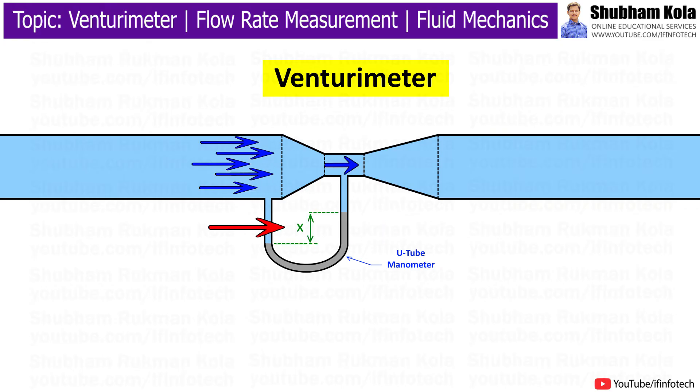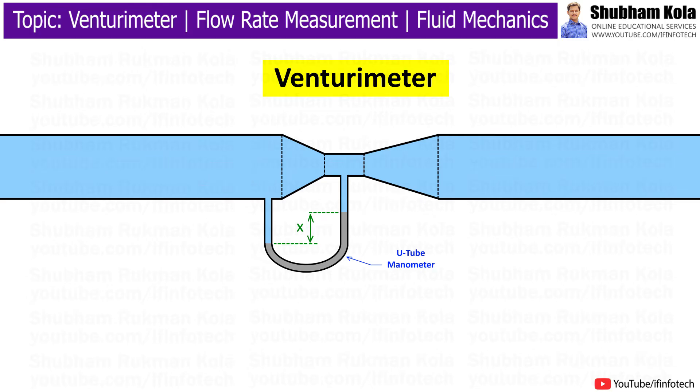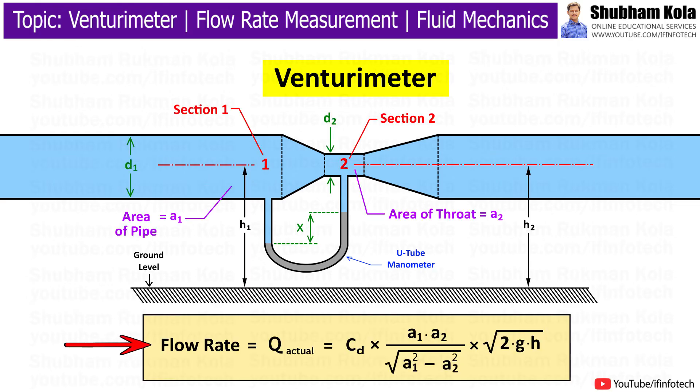This pressure difference between inlet and throat is determined with the help of a U-tube manometer. This pressure difference is used to calculate the flow rate of fluid in the pipe. The flow rate of fluid can be measured by using this equation.